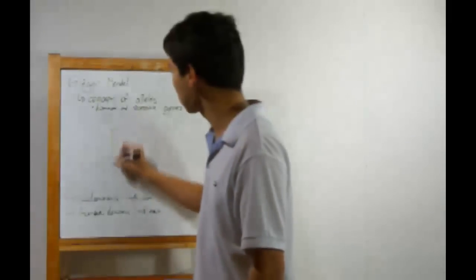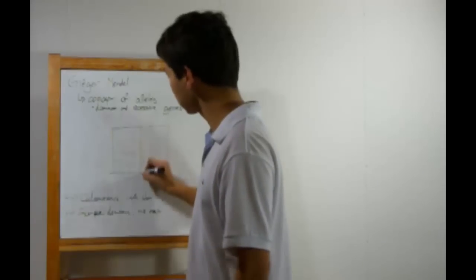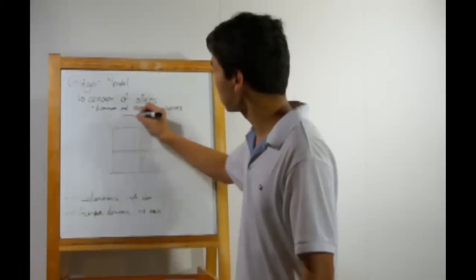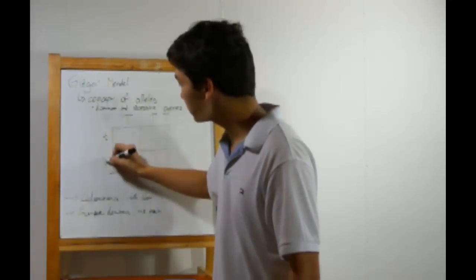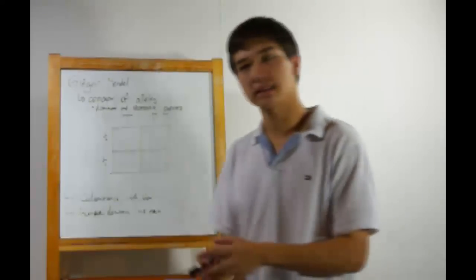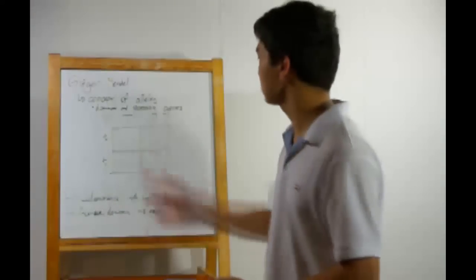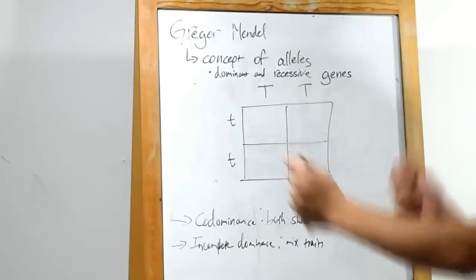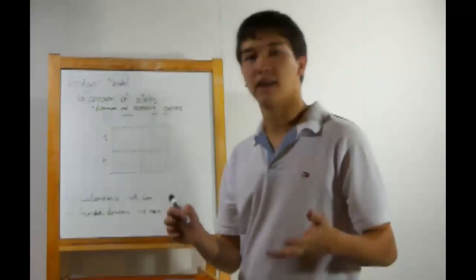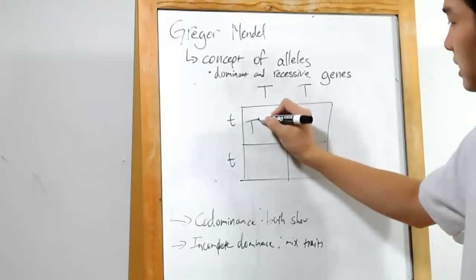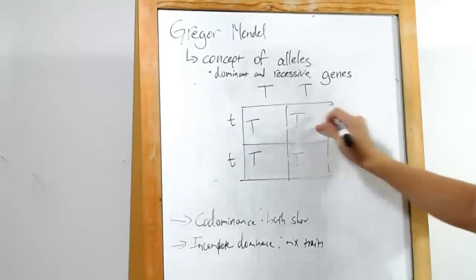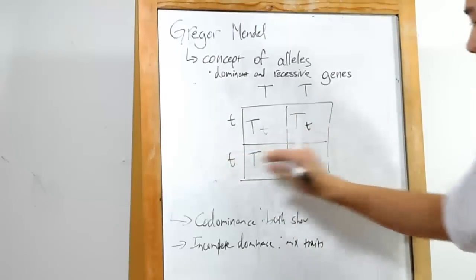Here is a quick Punnett square. We put in the first two plants right here. This demonstrates what Gregor Mendel called the segregation of alleles — it just means you split up the alleles when you create offspring. We split up one big T from the other big T, and split the two little ts. Now all we have to do is drop down our genes: take the big T and drop it into the boxes, then send the little t across the sides.